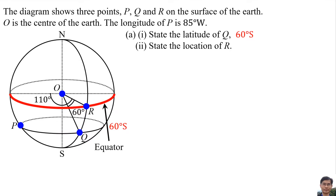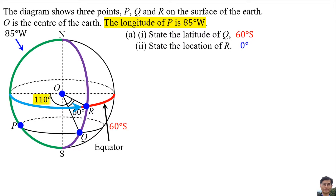State the location of point R. The latitude of point R is the equator, so the latitude of point R is 0 degrees — this is the purple curve. The latitude of point B is 85 degrees west, and the difference between the longitude of point B and point R is 110 degrees. So the longitude of point R is 110 degrees minus 85 degrees east, giving the location of point R as 0 degrees, 25 degrees east.